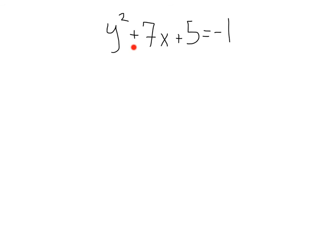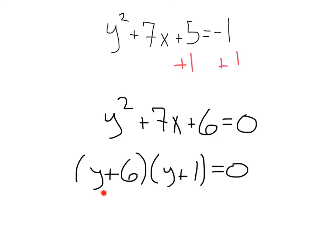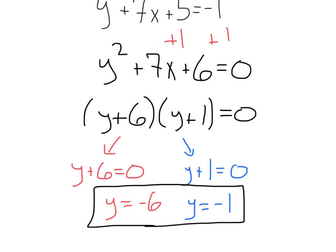Anyhow, we can handle this. It's not equal to 0, but we can make that happen. Doing a little plus 1 over here and a little plus 1 over here, we're going to get y² + 7y + 6 = 0. Now let's factor. We get (y + 6)(y + 1). Setting each of those equal to 0, we get y = -6 and y = -1.